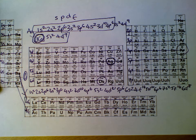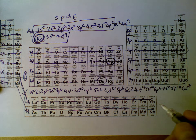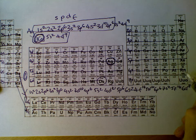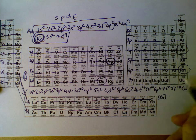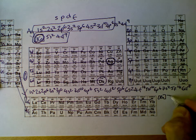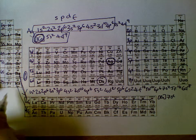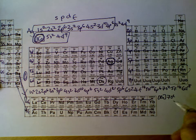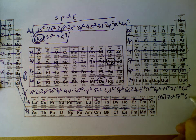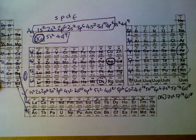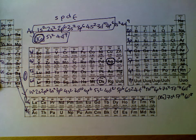This is our electron configuration. Or in shorthand terms, it's like radon, but after radon there's 7s2, this level here, and then 5f14, and then 6d8, and either of those would be the correct answer.